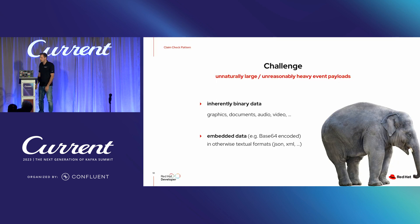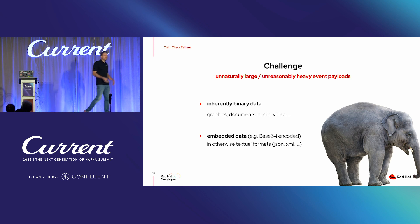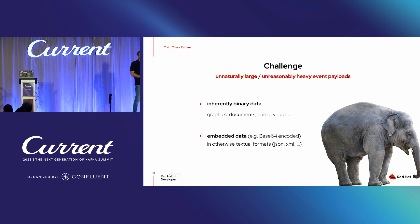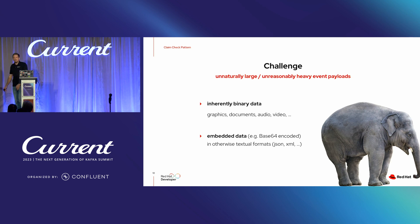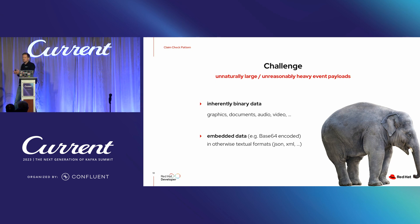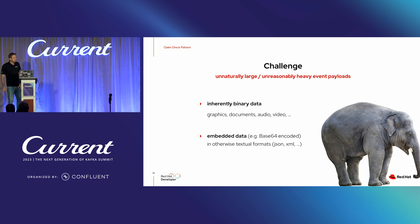Let's get started with pattern number one: the claim check pattern. The challenge we face at one point is dealing with unnaturally large or unreasonably heavy event payloads, for various reasons. One is dealing with inherently binary data — we could summarize the examples with media files that we might want to communicate in an event-driven way. Another, probably more common, scenario is having a textual payload like JSON where some fields contain embedded binary data that could be base64 encoded, and at one point this all becomes too large to be reasonably handled.